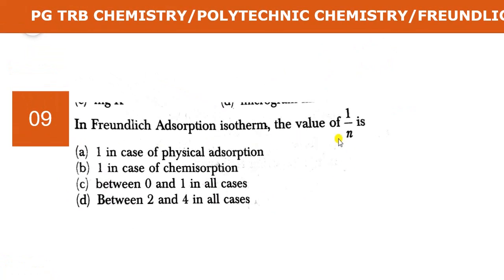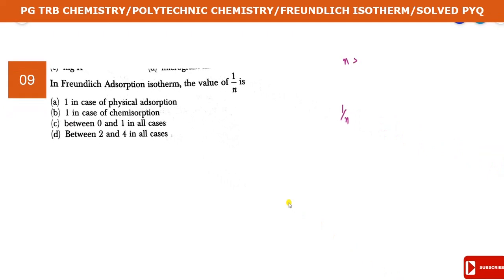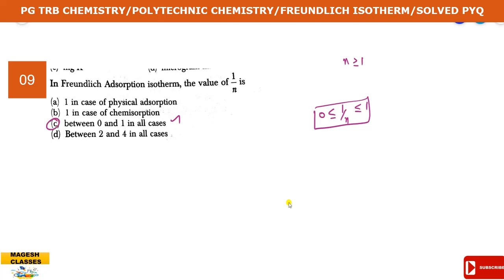For the Freundlich adsorption isotherm, the value of 1 by n: n is greater than or equal to 1, and 1 by n is less than or equal to 1 and greater than 0. So 1 by n is between 0 and 1. In all cases, your answer is c.